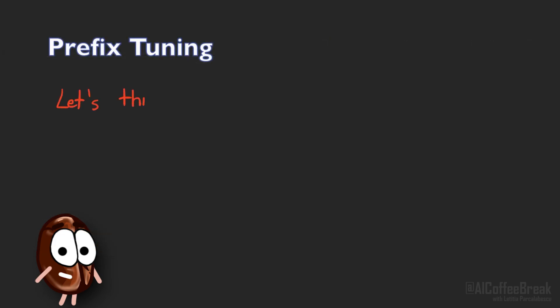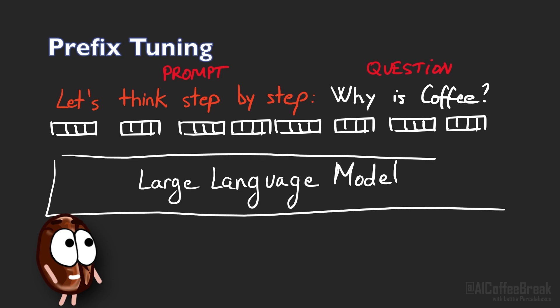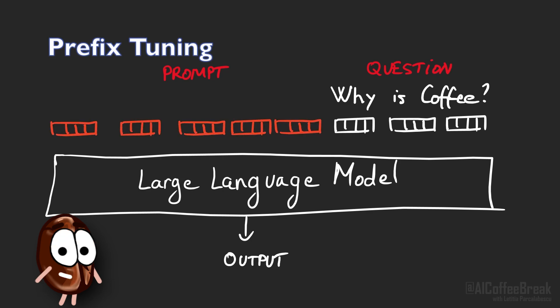Another common approach is prefix tuning, which is a continuous and automated version of prompt engineering. Instead of manually choosing the right words for the inputs to prompt the model to give the right answer, prefix tuning bypasses the word representation step. We add input vectors that do not stand for any words in particular, they are just vectors that we initialize randomly and we are calling them prefix. We tune the entries of these vectors with backpropagation until the model delivers the correct answer.